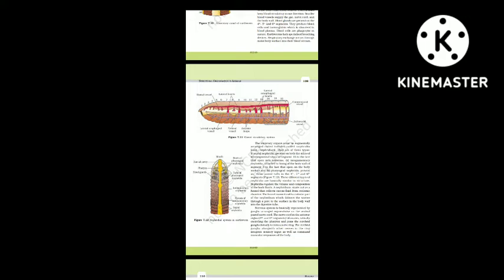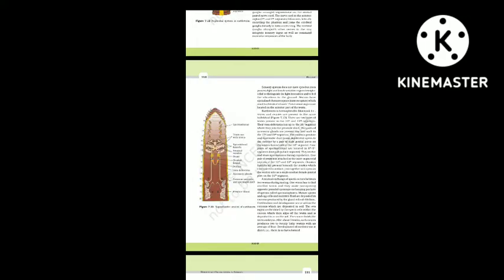The cerebral ganglia along with other nerves in the ring integrate sensory input and command muscular responses of the body. Earthworms do not have eyes but possess light- and touch-sensitive organs, and receptor cells to distinguish light intensities and feel vibrations in the ground. They have specialized chemoreceptors (taste receptors) which react to chemical stimuli; these sense organs are located on the anterior part of the worm.